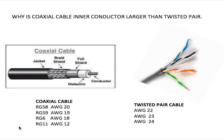I went ahead and did some research and found all the different sizes of coaxial cables, starting with RG58. RG58 has an AWG of 20. AWG stands for American Wire Gauge — this is the gauge of the wire. RG58 has a gauge of 20, RG59 has a gauge of 19, RG6 has 18, and RG11 has 12.